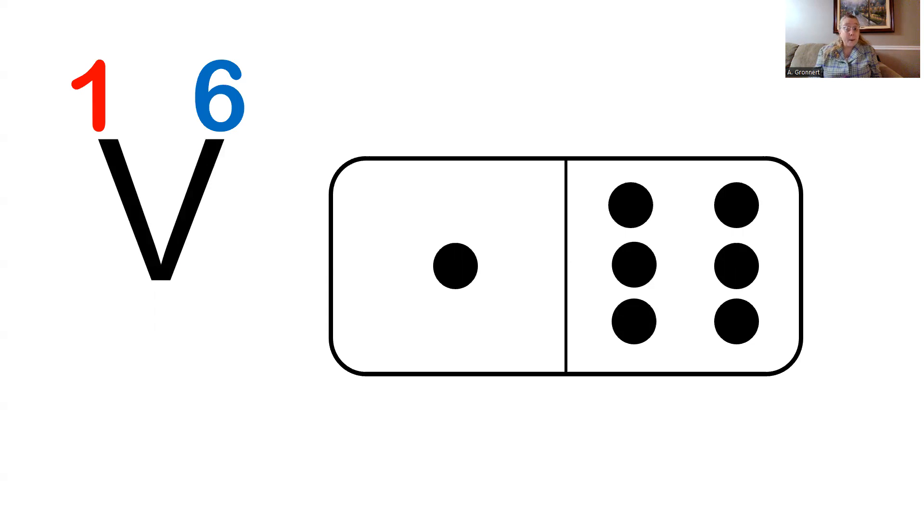And so if my parts are 1 and 6, what's the total number of dots? You got it! 7!